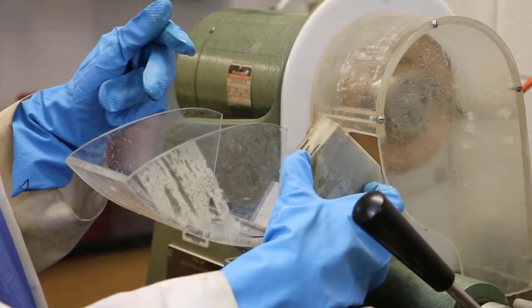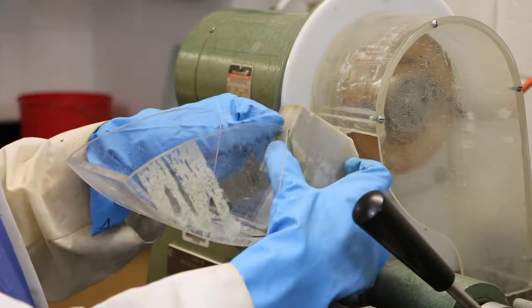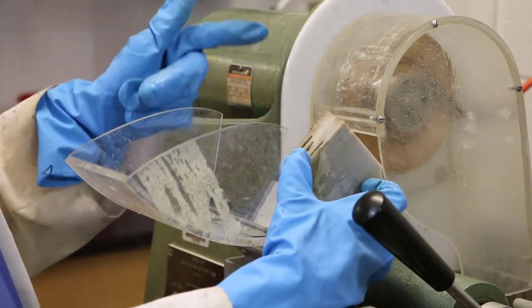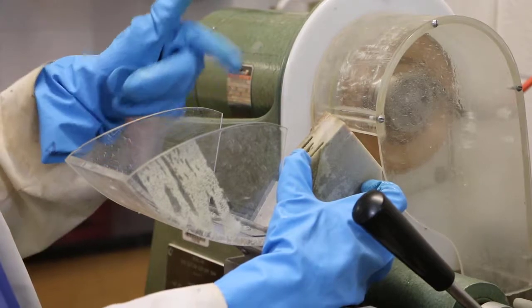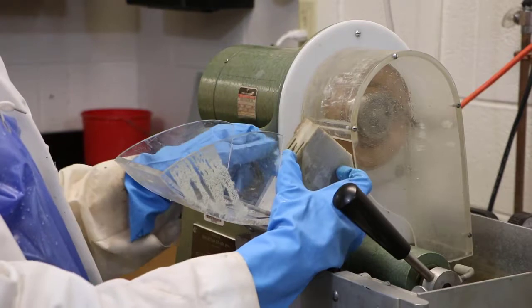For this specific saw, the part that has diamonds in it is something like half a centimeter or about five millimeters wide. So all I really need to do is make sure I go that far into the sharpening stone.